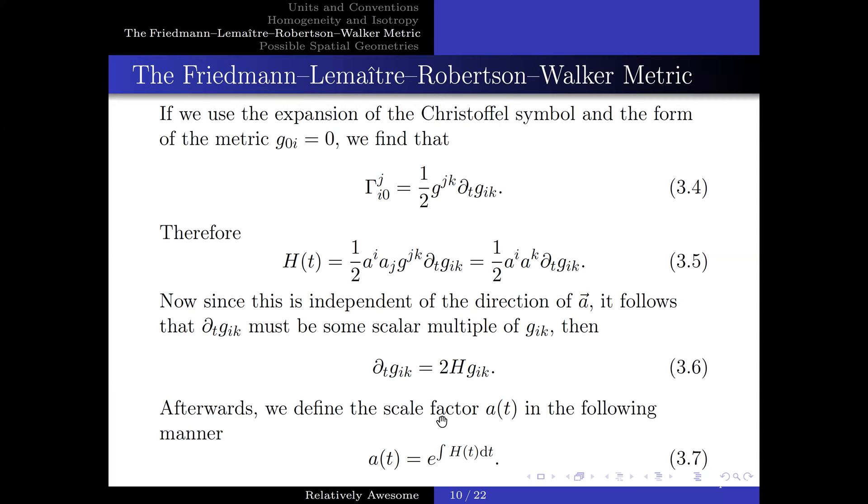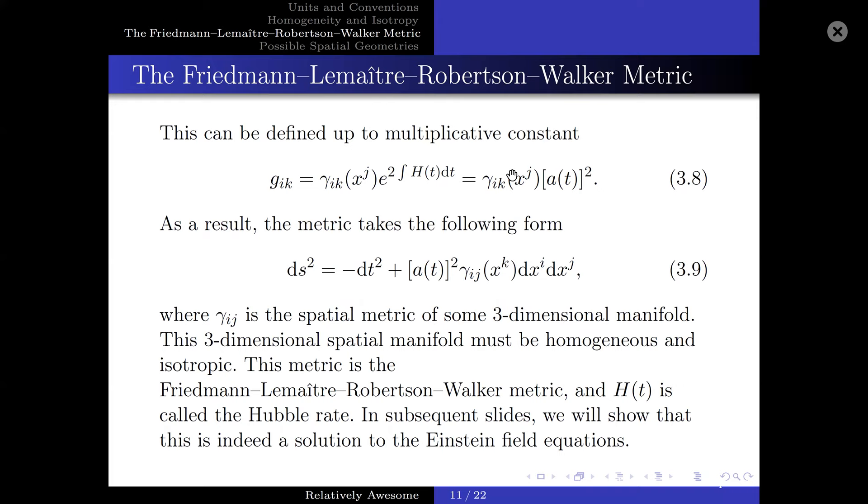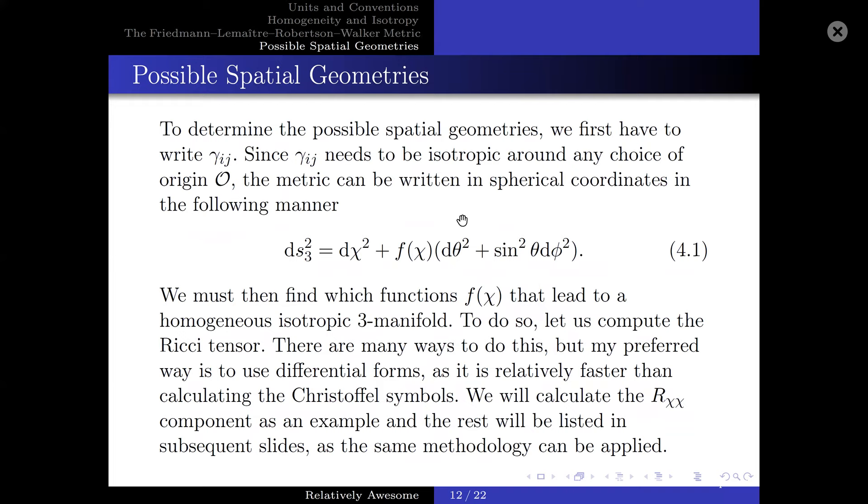And thus, we define a scale factor, a(t), in the following manner. This can be defined up to some multiplicative constant. And as a result, the metric can take the following form, where γ_ij is the spatial metric of some three-dimensional manifold. And this three-dimensional manifold must be homogeneous and isotropic. This metric is known as the Friedmann-Lemaître-Robertson-Walker metric. And H(t) is known as the Hubble rate. And in subsequent slides, we will show that this is indeed a solution to the Einstein field equations.